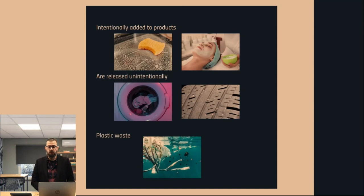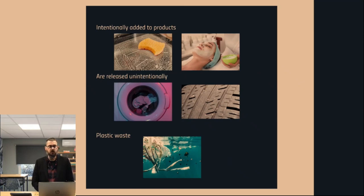The next thing that releases microplastics is plastic waste. There is already a great amount of plastics available in the environment — like the Great Pacific garbage patch, which is a very large number of plastic objects floating in the ocean that grind against each other. The influence from the environment, like UV radiation and frost, all adds to the degradation of plastic and the generation of small plastic particulates.